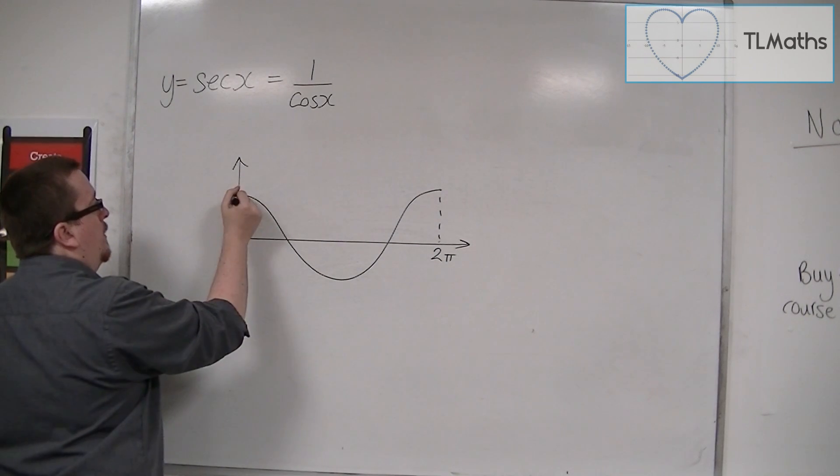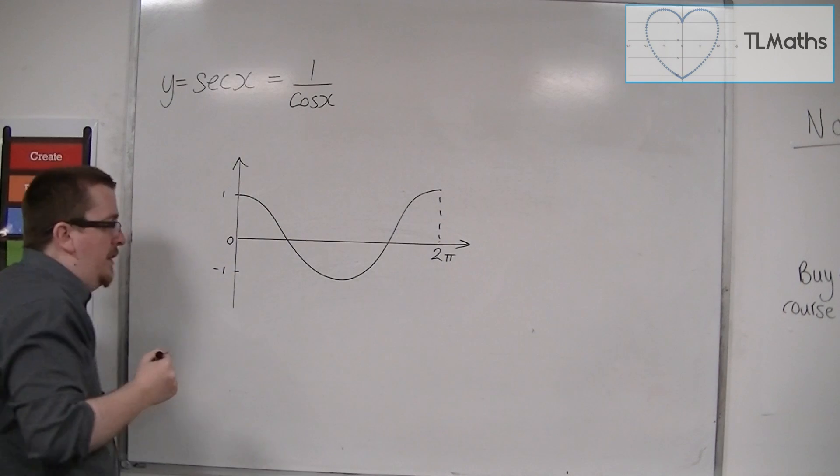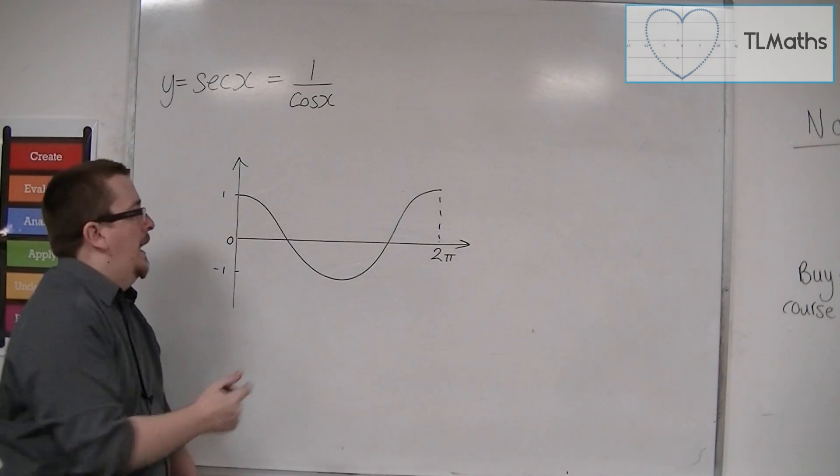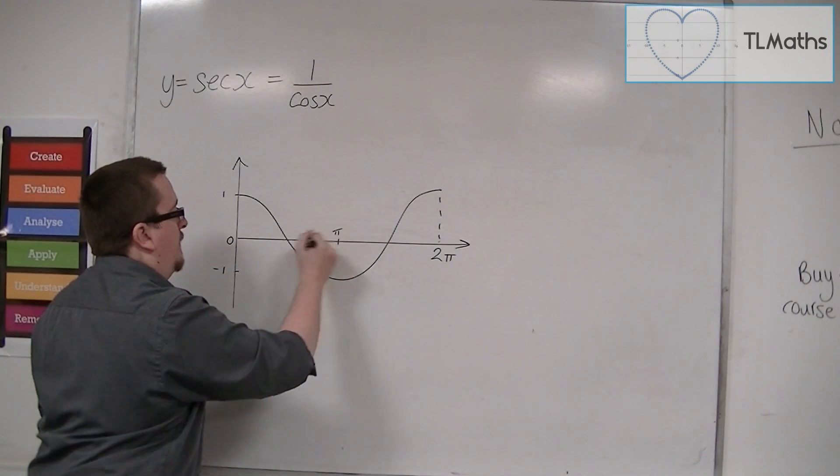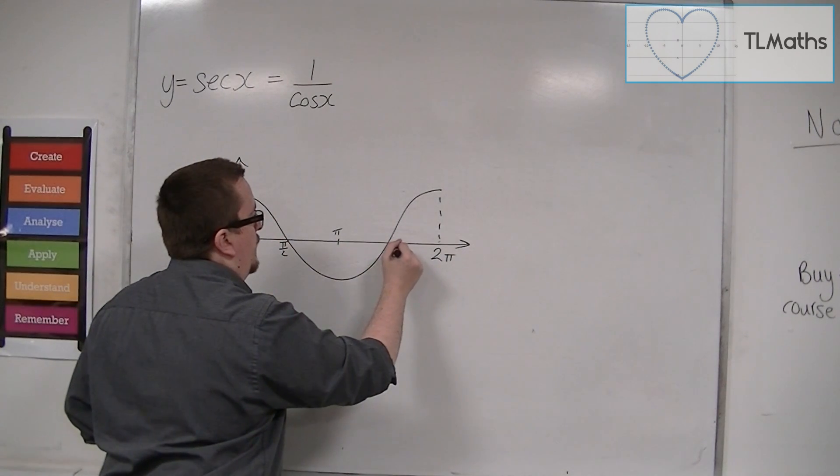There's 2 pi. There's 0. This point is 1. The minimum point is minus 1. That point is pi. That's pi over 2. And that's 3 pi over 2.